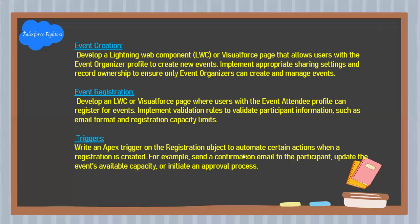Next: triggers — write an Apex trigger on the Registration object to automate certain actions when a registration is created. For example, send a confirmation email to the participant or update the event's available capacity. Also implement an approval process.